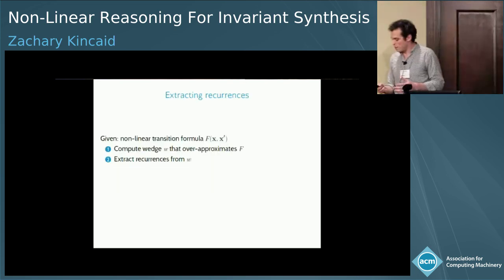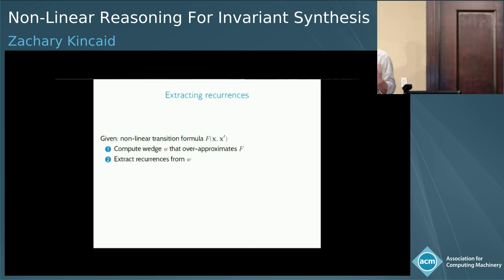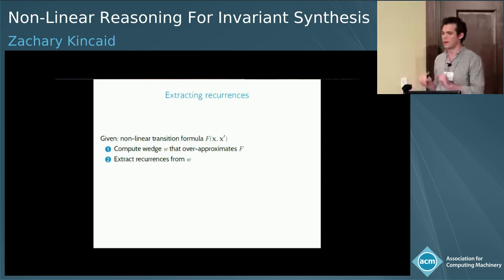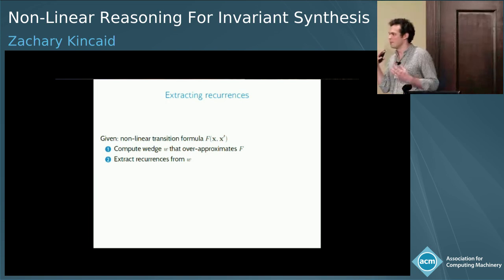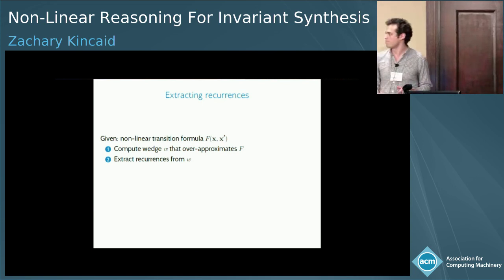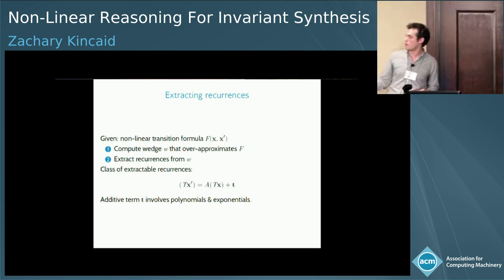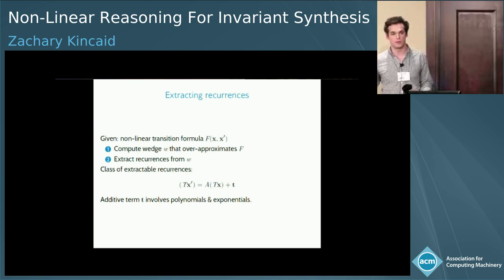The high-level process is: we start with some nonlinear formula, compute a wedge that over-approximates it, and then extract recurrences from the wedge. The process for extracting recurrences from a wedge is similar to the one for the linear case — based on fixed point iteration. The mathematics gets hairier, but the intuition stays the same. The class of recurrences that can be extracted corresponds to systems of equations with an additive term involving polynomials and exponentials.